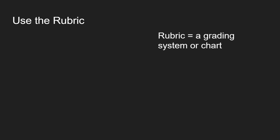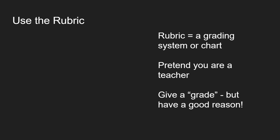The first tip is to use the rubric. Rubric is just an academic word for a grading system or chart — any way that a teacher or class is assigning value to what you created. When you use the rubric you want to pretend that you are a teacher, pretend that you are giving a grade the same way that the teacher would. And when you give that grade you want to have a good reason. Using the rubric helps you be specific about why you are grading or evaluating the writing the way that you are.